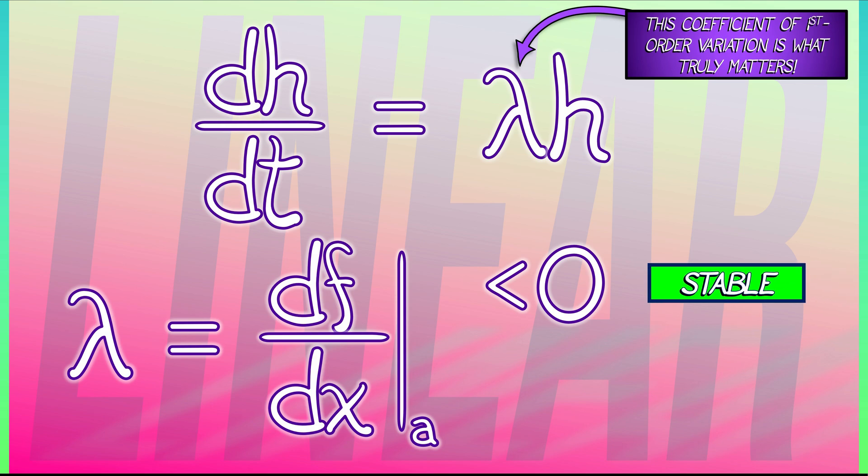On the other hand, if this derivative evaluated at the equilibrium is positive, that means we are evolving according to an exponential with a positive coefficient. That's an unstable equilibrium. You're moving away. The distance is increasing.